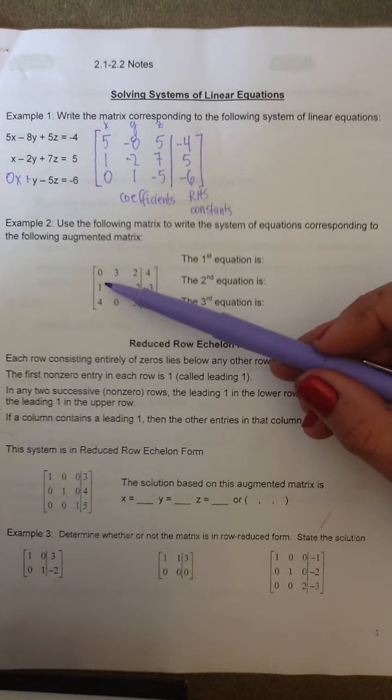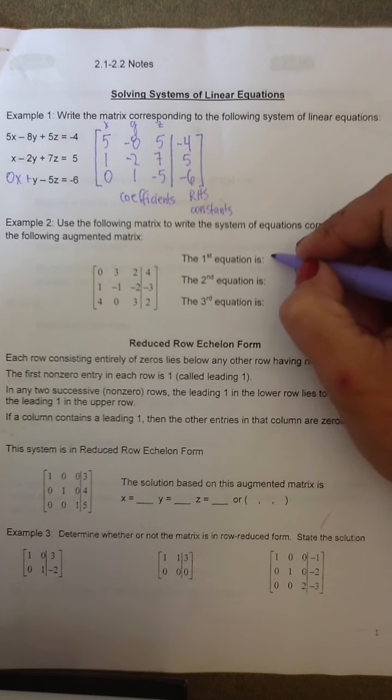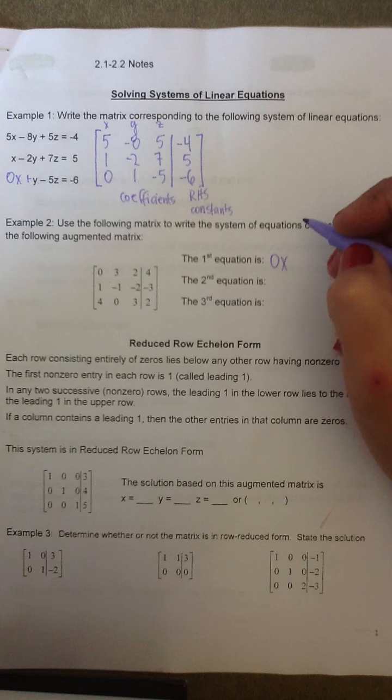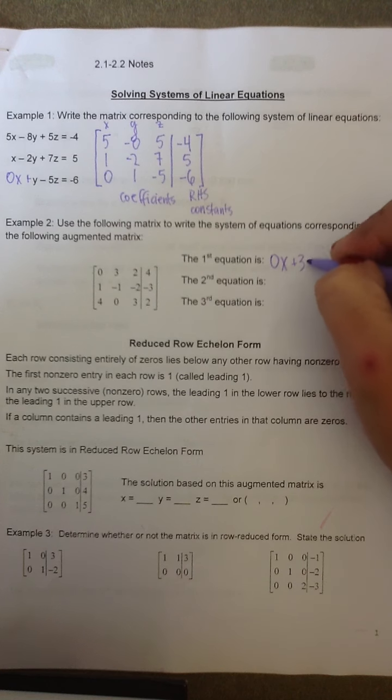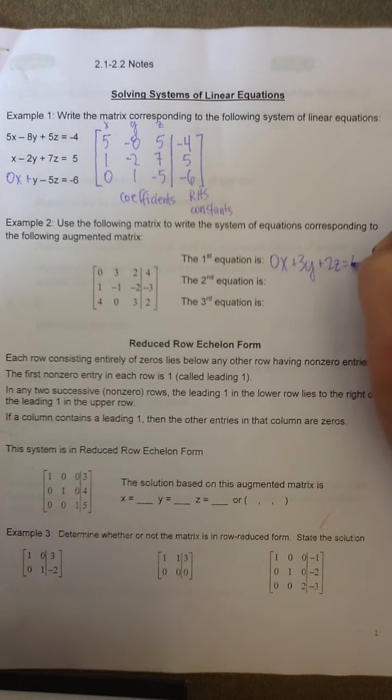Once again, we have a 0 in our matrix. So if I wanted, I could represent this first equation with 0x plus 3y plus 2z equals 4.